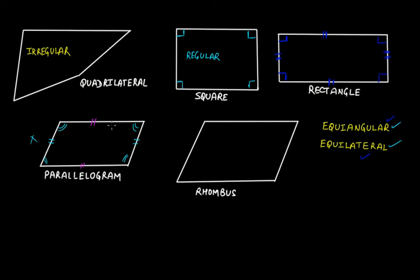So a parallelogram is neither equiangular, because the internal angles are not equal to each other, nor equilateral, because all the sides are not equal to each other — only opposite sides are equal. So this is an irregular polygon.